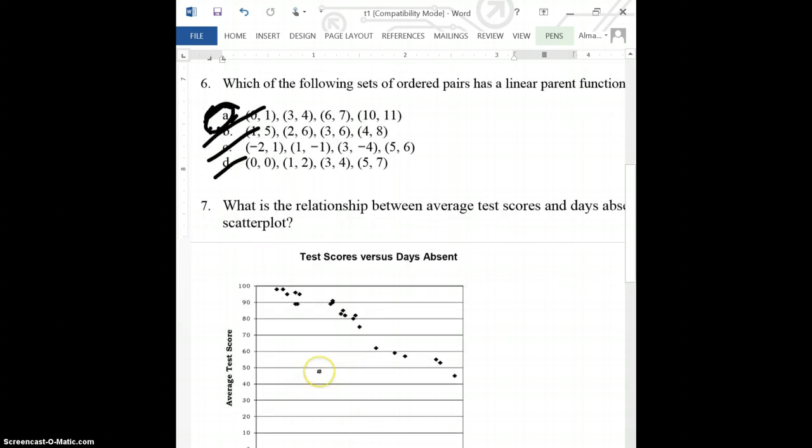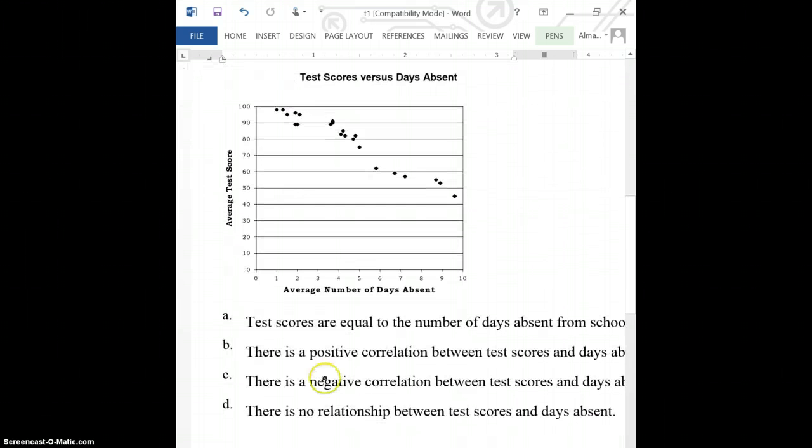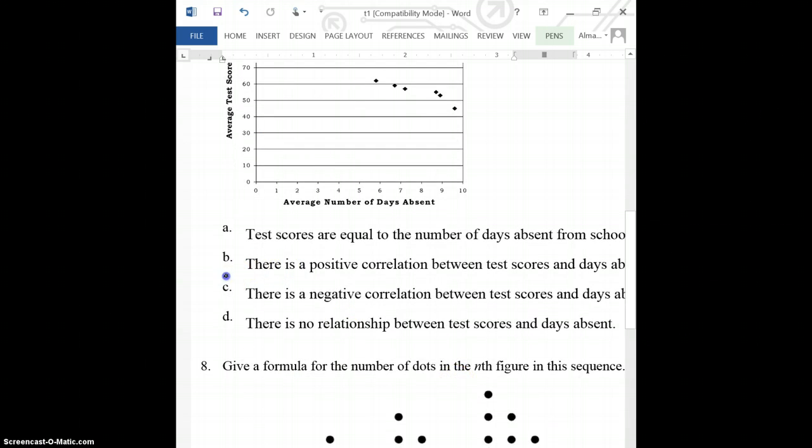Number 7. What is the relationship between the average test scores and the absence in this scatter plot? So, we can see automatically that the points are going down, which means that I'm having a negative correlation. It means that the more days that you're absent, the lower your test scores, which makes sense. This is a negative correlation. And the answer is C because all the points are going down.